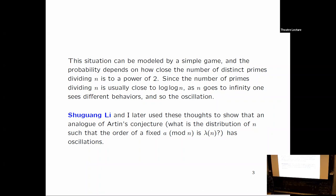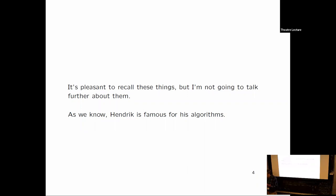So the analog is, for a fixed a mod n, how often is its order equal to the maximal order lambda n? So the density of such n oscillates, in fact always zero is the lower oscillation point, and on the generalized Riemann hypothesis, it's positive. So it's pleasant to recall these old problems, and I'm not going to talk further about them. And as we know, Hendrik is famous for his algorithms.